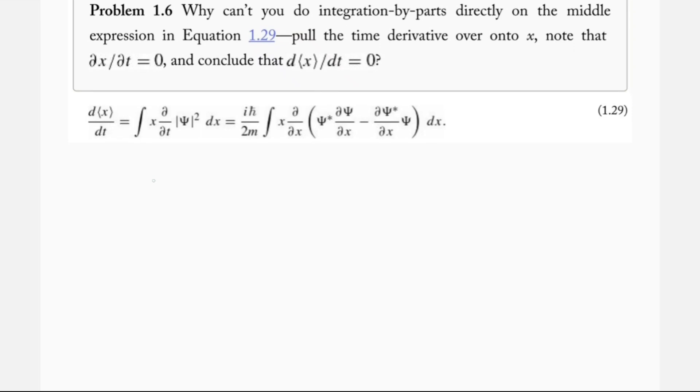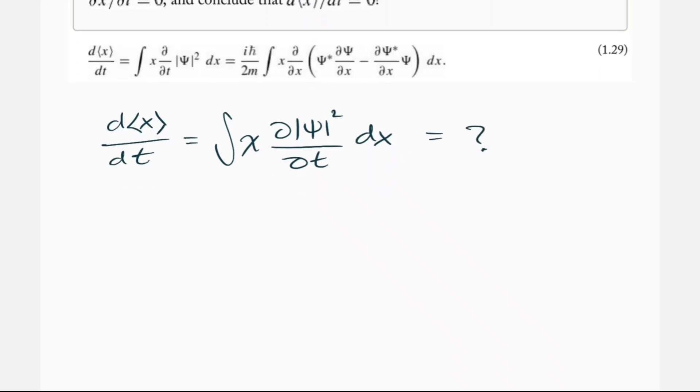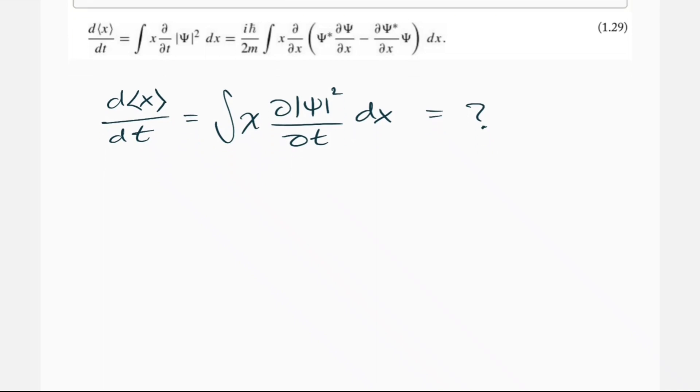And so essentially what happens is we have this integral where the derivative with respect to t of the expectation value of x is equal to the integral x times partial derivative of psi squared wave function squared with respect to t, dx. And that, we're trying to solve this integral.